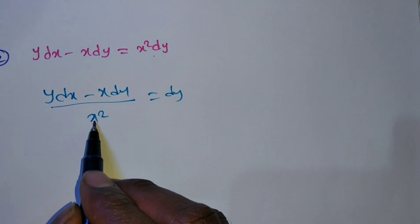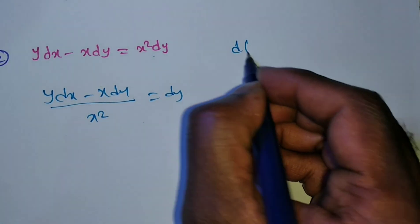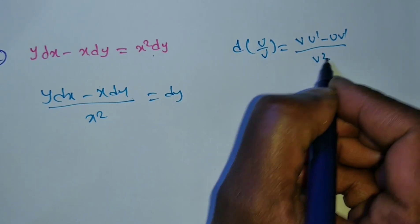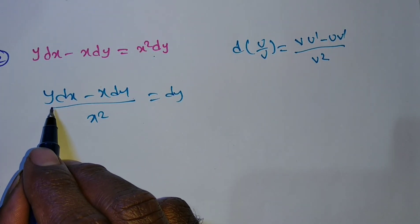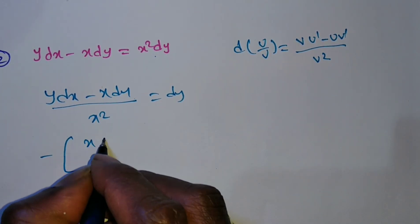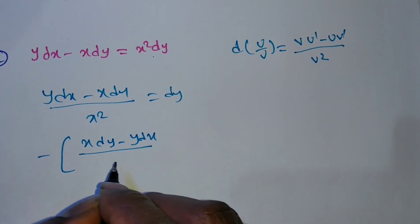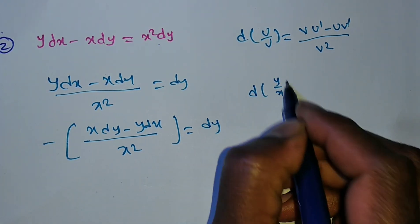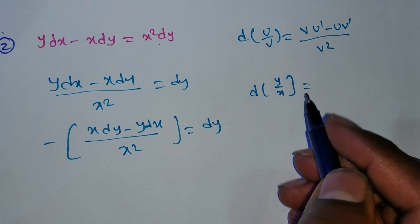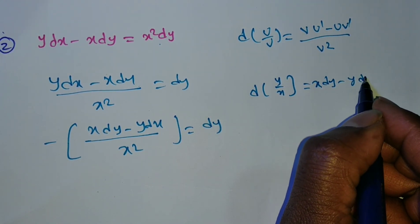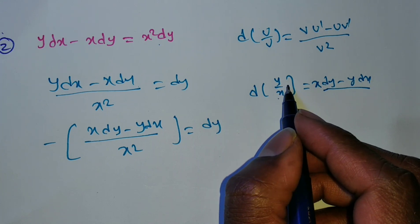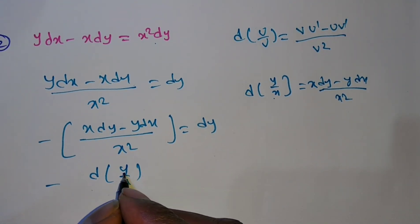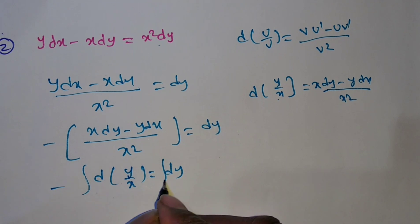If I divide with x²: (y dx − x dy) / x² = dy. Take minus as common: (x dy − y dx) / x² = dy. The derivative of y/x is (x dy − y dx) / x². So I can write d(y/x) = dy. Just integrating both sides: integration and differentiation cancel, giving −1/x = y + C. This is the solution.